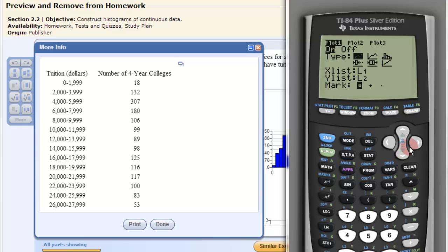Now we'll go down and click the histogram. That's what we want to graph. Hit enter. Then we're going to go down to our x list. Our x list is our horizontal axis. That's where the classes are going to be, from zero to one thousand nine hundred ninety nine, two thousand to three thousand nine hundred ninety nine.